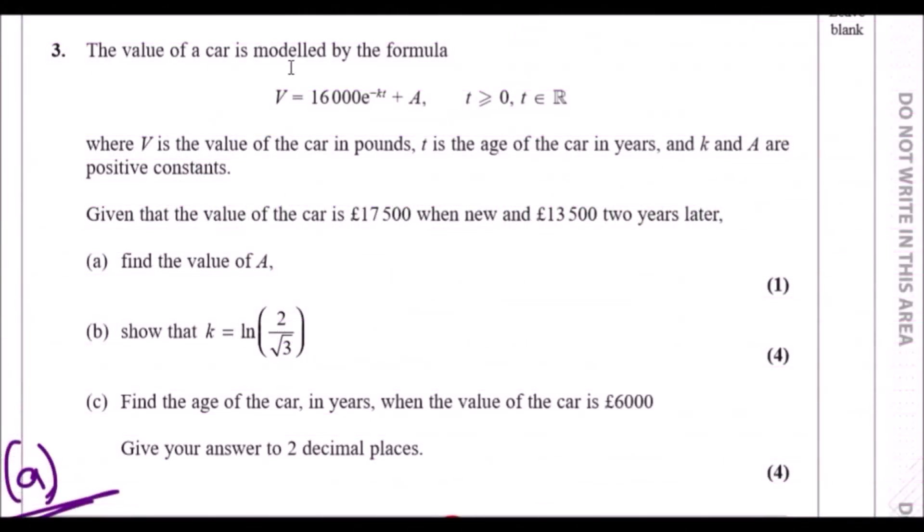The value of a car is modeled by the formula V equals 16,000 e to the negative kt plus some constant a, where V is the value of the car in pounds, t is the age of the car in years, and k and a are both positive constants.